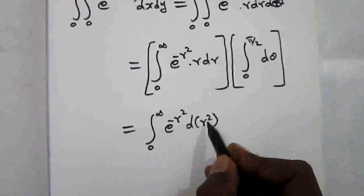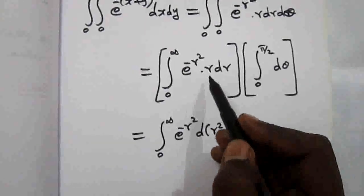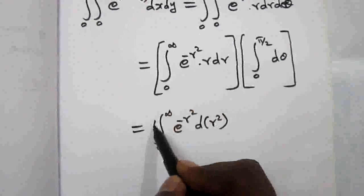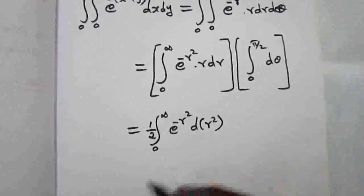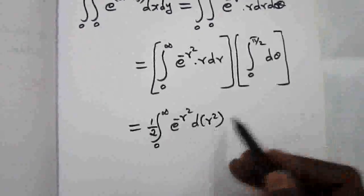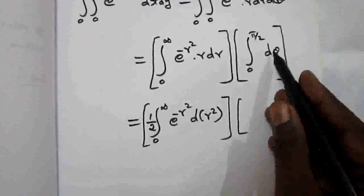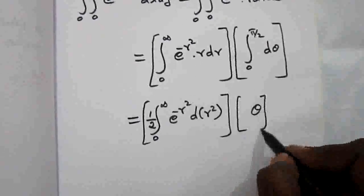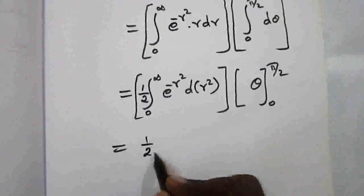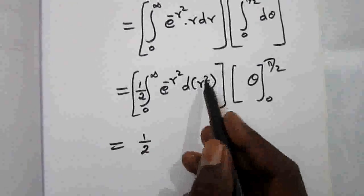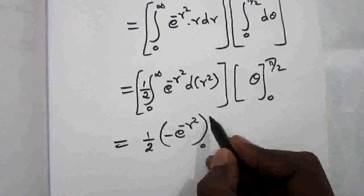To evaluate the first integral, r dr can be written as (1/2) d(r squared), because the differential of r squared is 2r dr. Since we don't have the factor of 2, we multiply and divide by 2, putting 1/2 outside. So the integral becomes (1/2) times the integral of e to the power minus r squared, d(r squared), which gives minus e to the power minus r squared, evaluated from 0 to infinity.